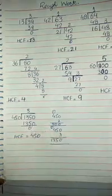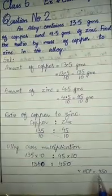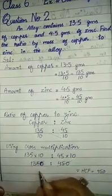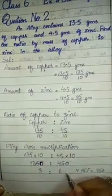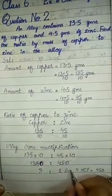So HCF, you have to mention the highest common factor is 450. 450 threes are 1350, 450 ones are 450. So this is the answer: 3 to 1.